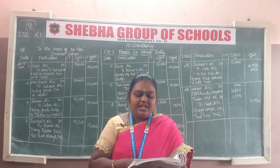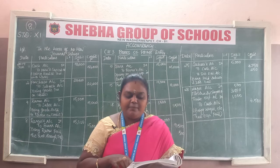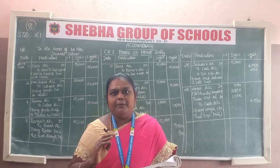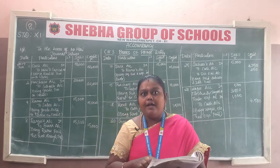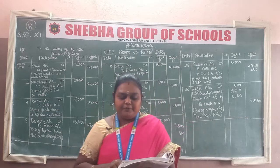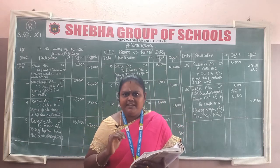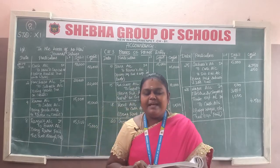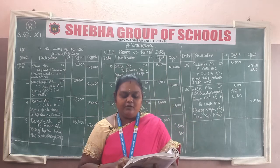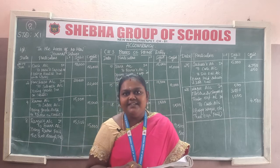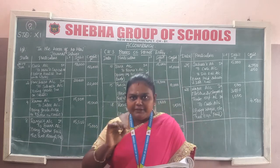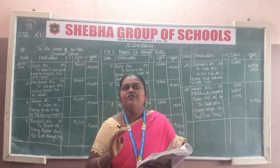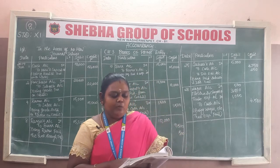Next transaction: paying half the amount owed to Ms. Jay Lakshmi Furniture by check. The original purchase was Rs. 28,000, so half the amount is Rs. 14,000. The receiver here is the bank. Entry: Ms. Jay Lakshmi Furniture account debit to bank account for Rs. 14,000.